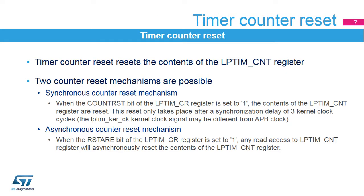The low-power timer features a counter-reset function used to reset to zero the contents of the LP-TIM-CNT register. Two counter-reset mechanisms are possible: the synchronous counter-reset mechanism and the asynchronous counter-reset mechanism. A synchronous counter-reset is performed by setting the COUNT-RST bit, and due to its synchronous nature, it only takes place after a synchronization delay of three LP-TIM kernel clock cycles. When the RST-ARE bit is set, an asynchronous counter-reset is performed on the next APB read access to the LP-TIM-CNT register.